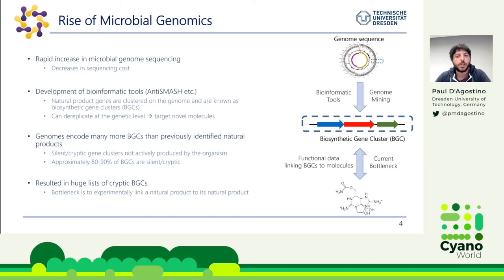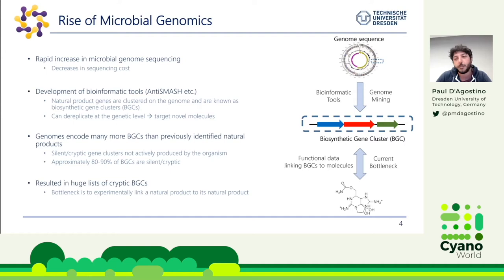This approach allows you to dereplicate at the genetic level, predict what the structure might be, and more easily target novel molecules. It has become apparent that many genomes encode many more biosynthetic gene clusters than there are identified natural products. The classic example is Streptomyces coelicolor, studied for 50 years as a known natural product producer. Once they sequenced the genome, they found about 10 times more biosynthetic gene clusters than known natural products. These non-producing clusters are known as silent or cryptic pathways.